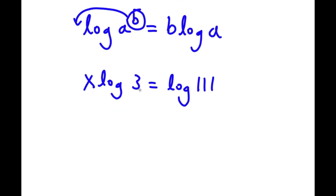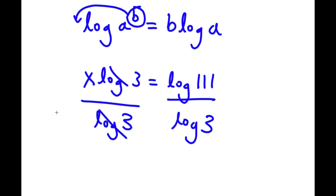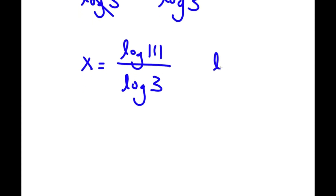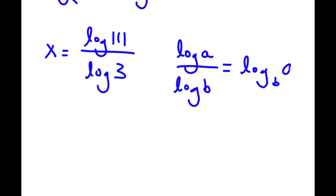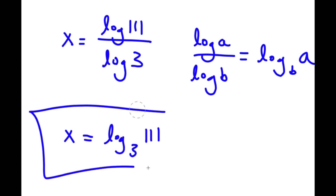So now what I'm going to do is divide both sides by log 3. For my left-hand side, these two log 3s simply cancel out and I'll be left with x is equal to log 111 over log 3. Now if I have something in the form log a over log b, this is simply equal to log base b of a. So in this case, I have log 111 over log 3, and I can write this as log base 3 of 111. So this is my answer.